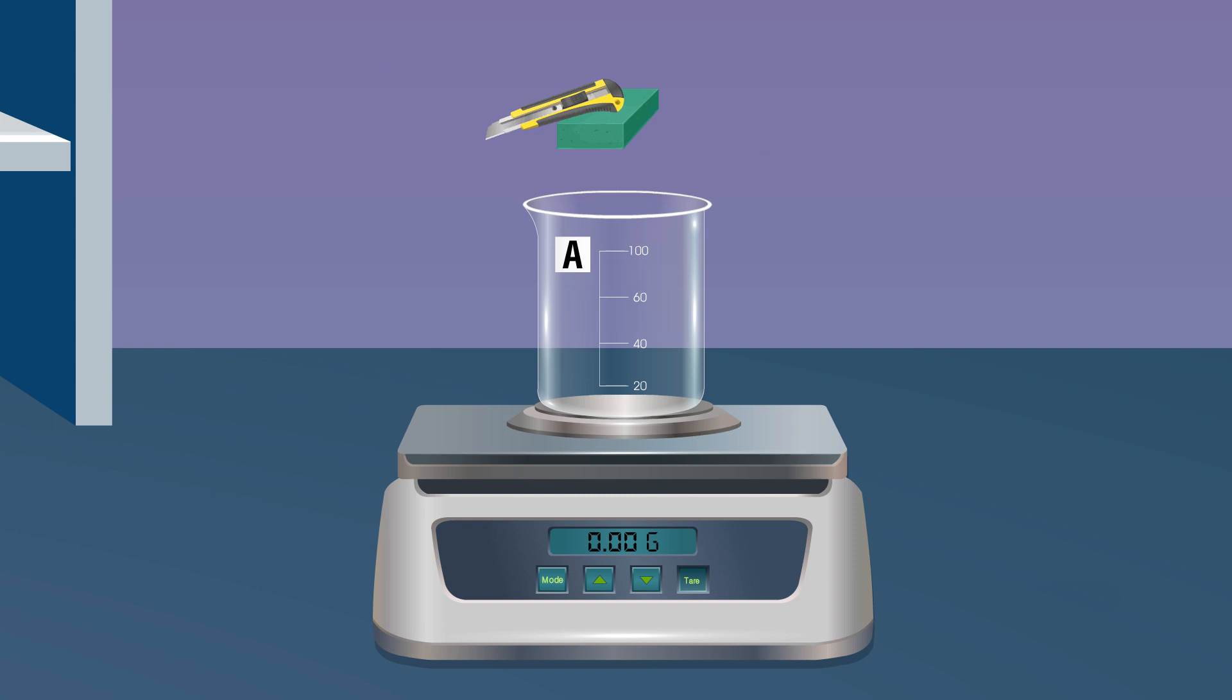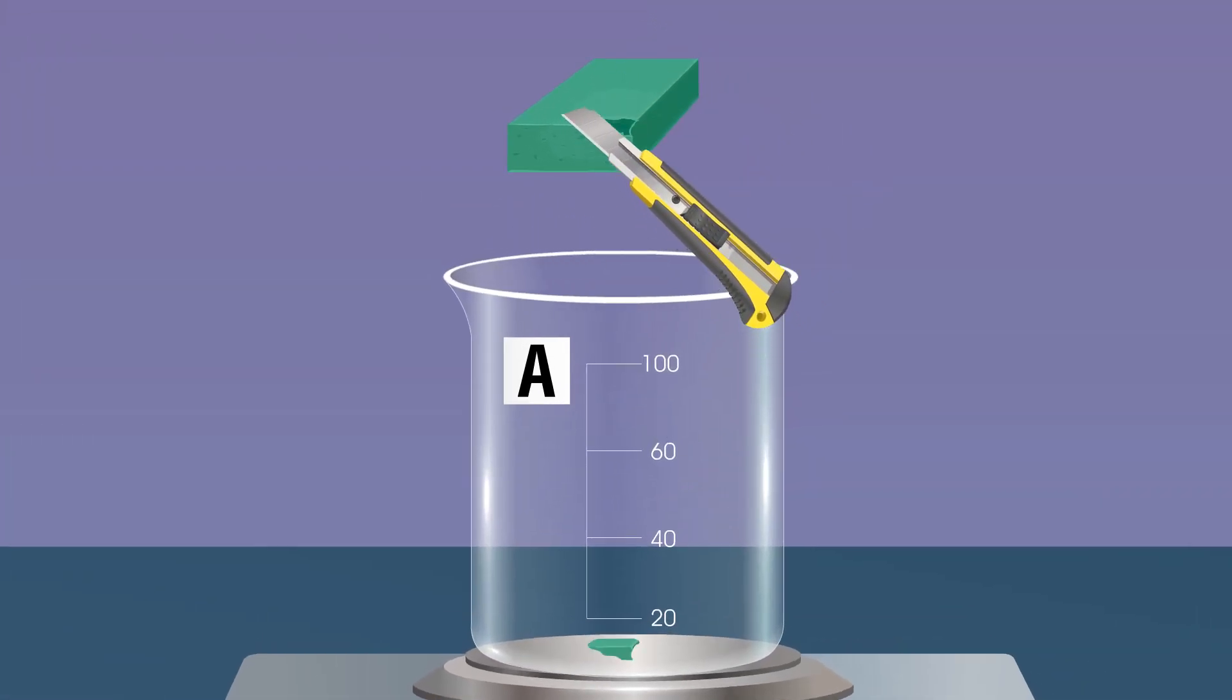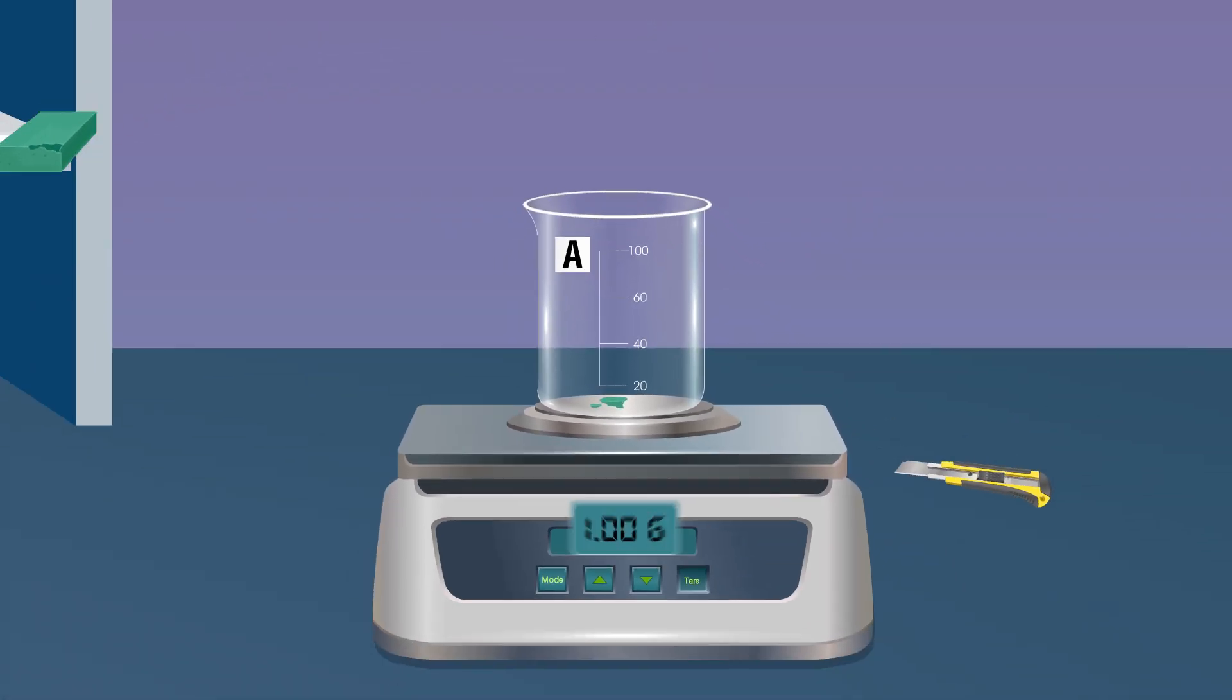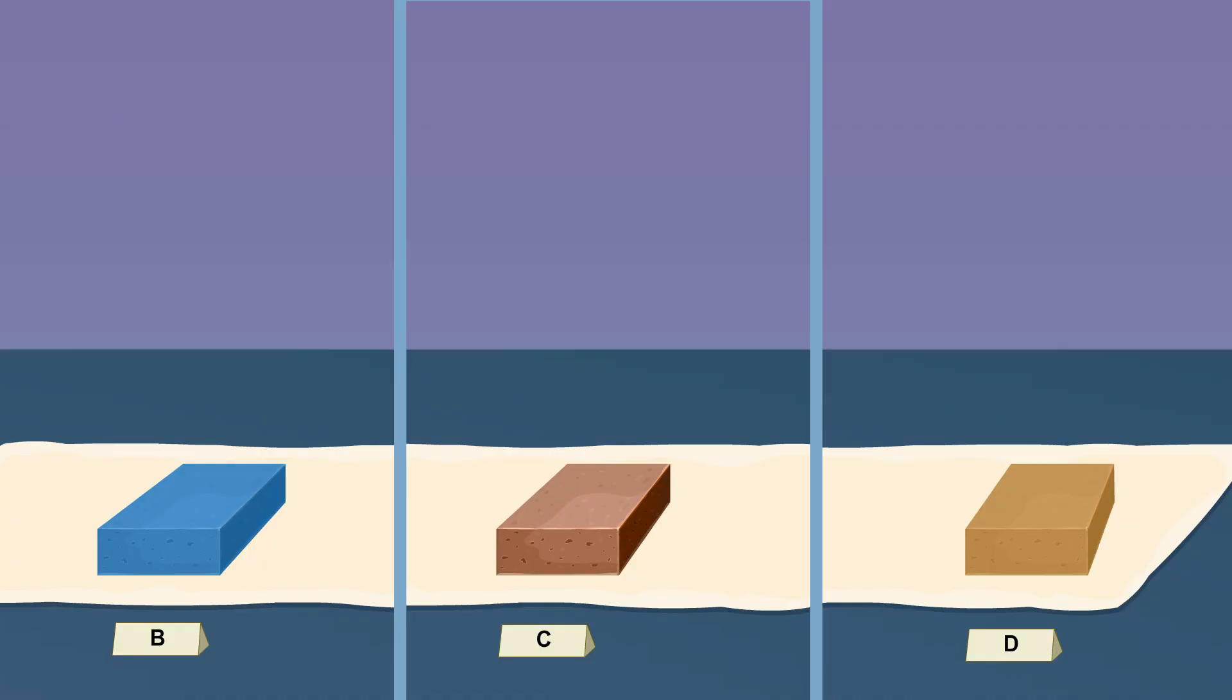Until the electronic balance shows a one gram reading and repeat the steps for B, C, and D.